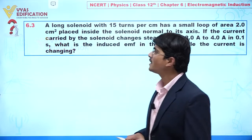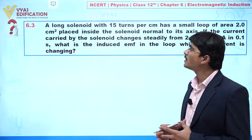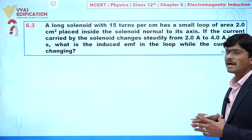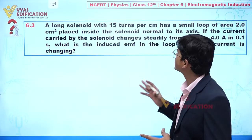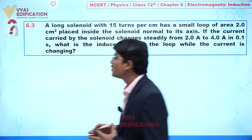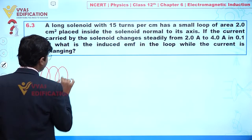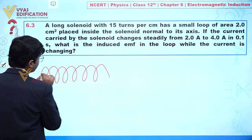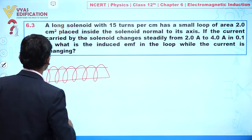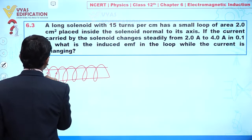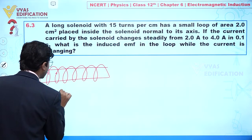We are going to discuss question number 6.3. In this question, a long solenoid with 15 turns per centimeter has a small loop of area two centimeters square placed inside the solenoid, normal to its axis. Let's suppose this is the solenoid, and we have a core inside it. Current I is flowing through the solenoid.